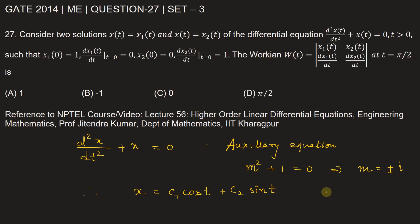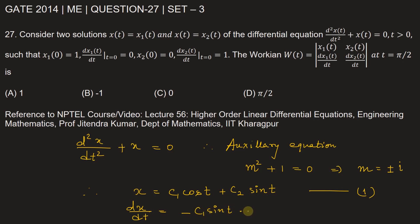And the first derivative dx/dt will be equal to -c1·sin(t) + c2·cos(t). Let this be equation number two.